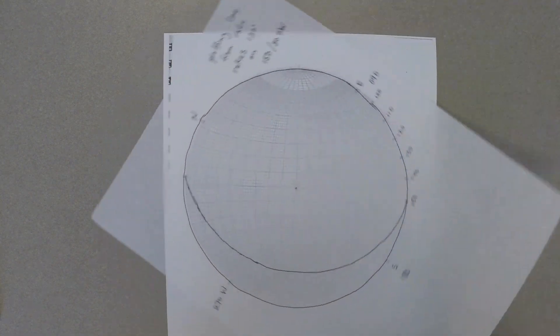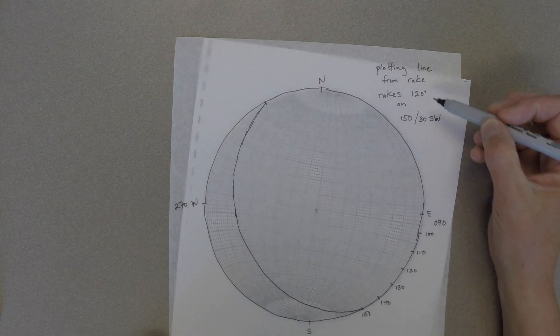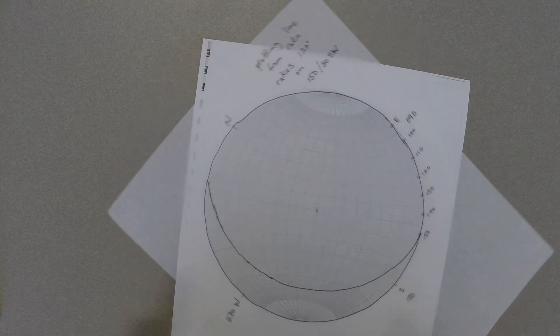So here is our plane. We spin it back to north. You can see what the strike and dip of a plane that has a strike of 150 degrees and a dip of 30 southwest looks like.